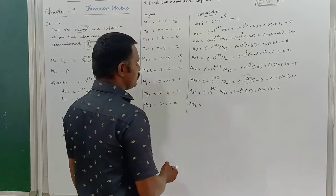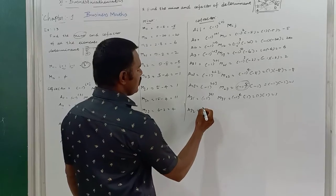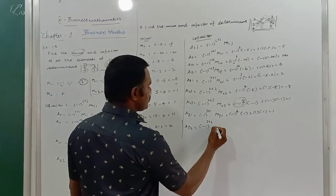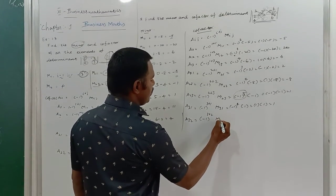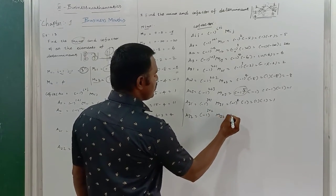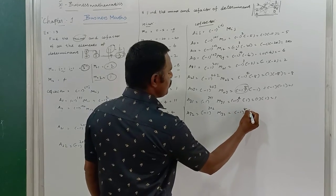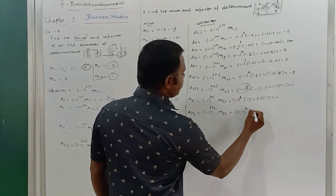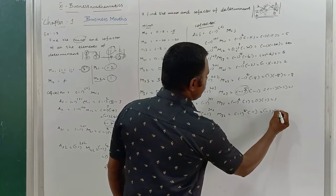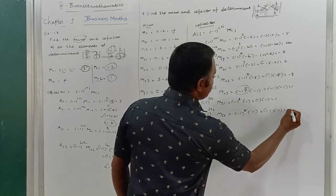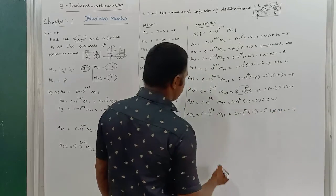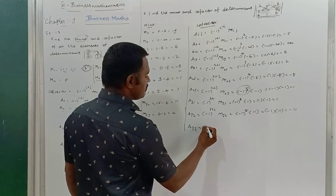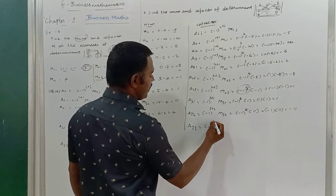A32 = (-1)^(3+2) × M32 = (-1)^5 × 11 = minus 1 × 11 = minus 11.